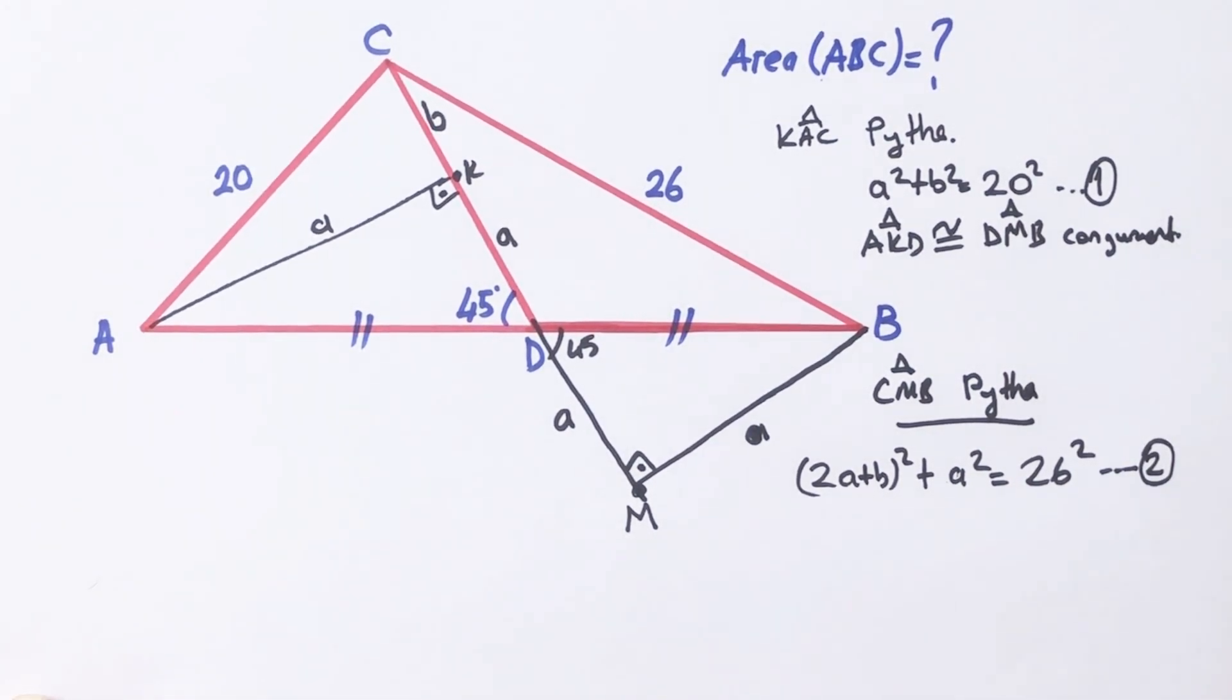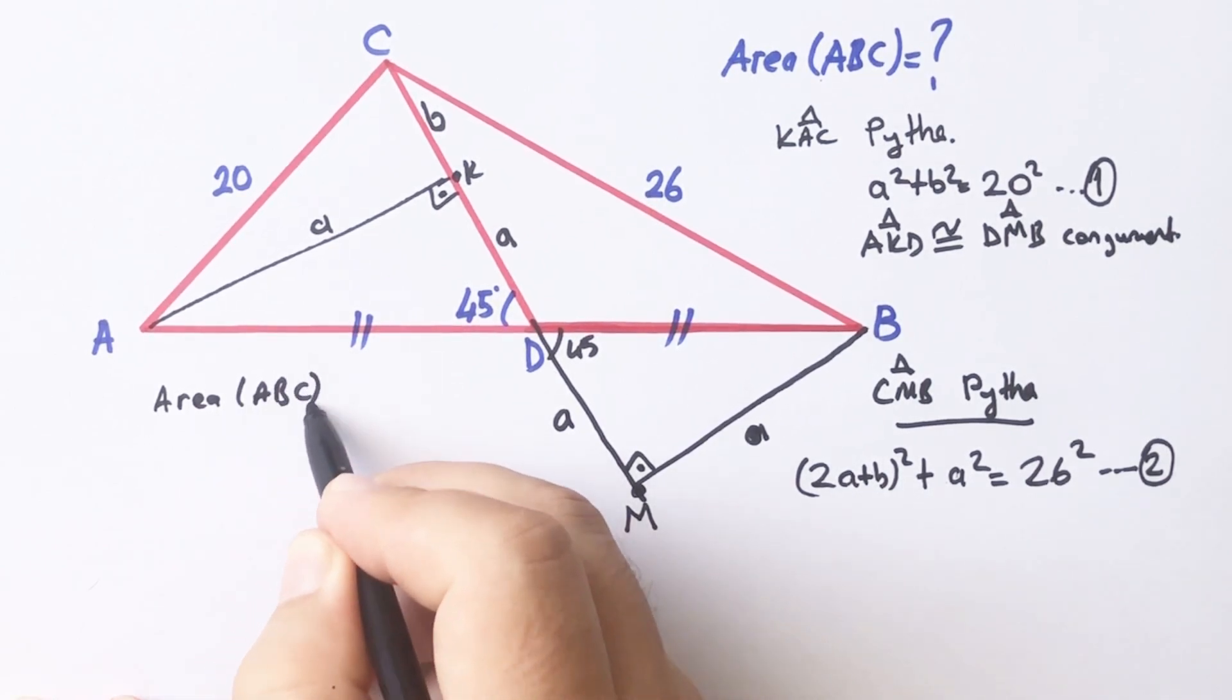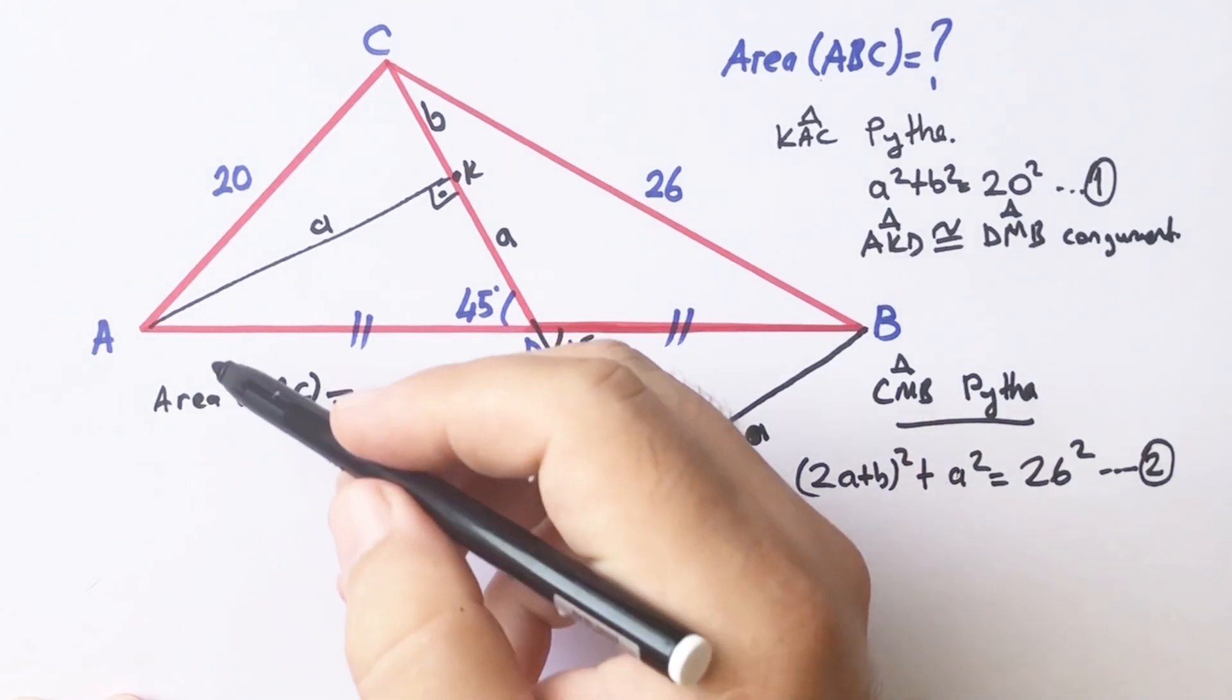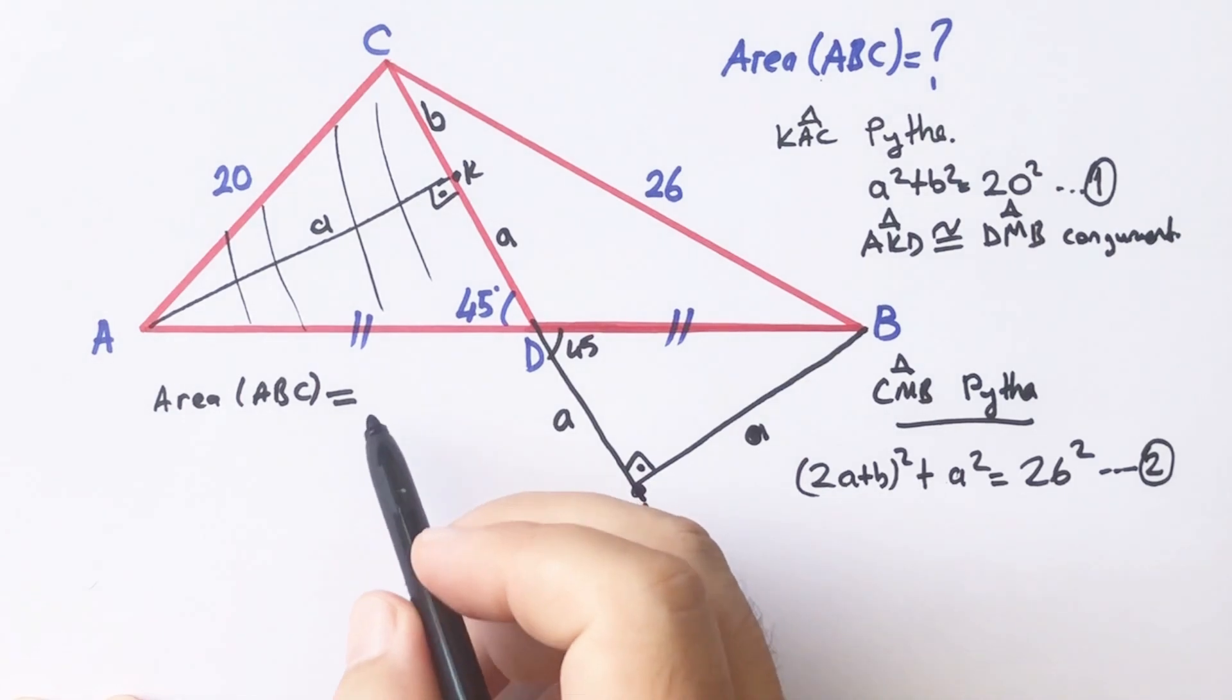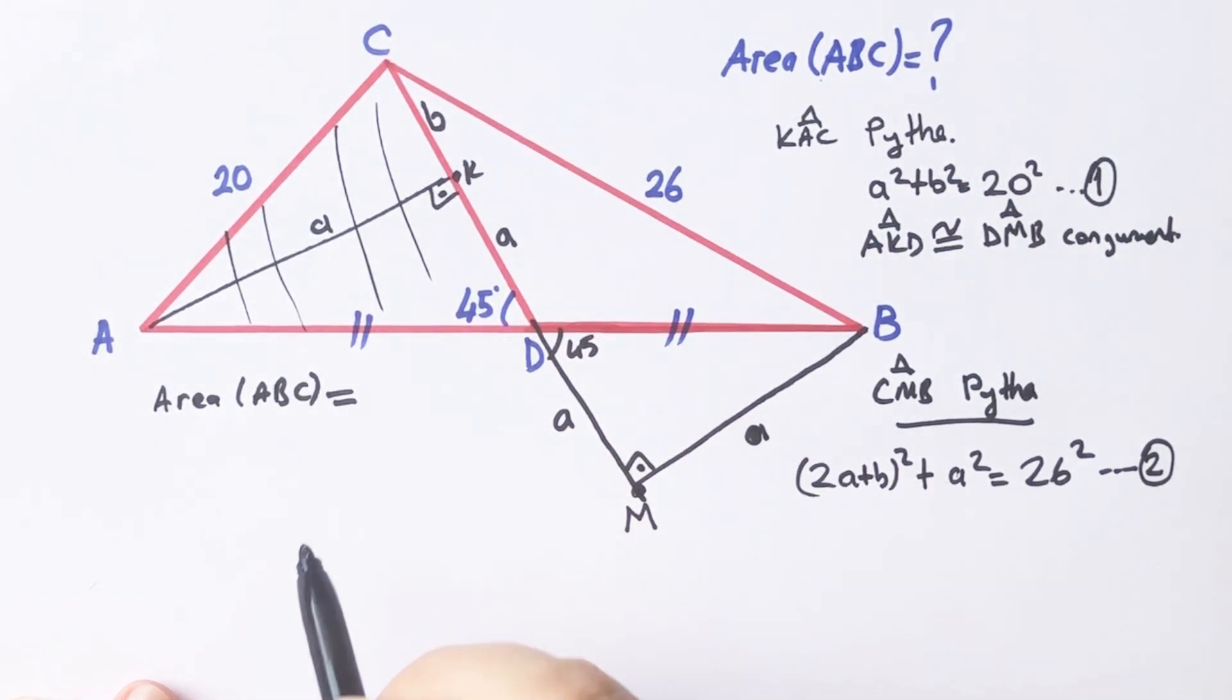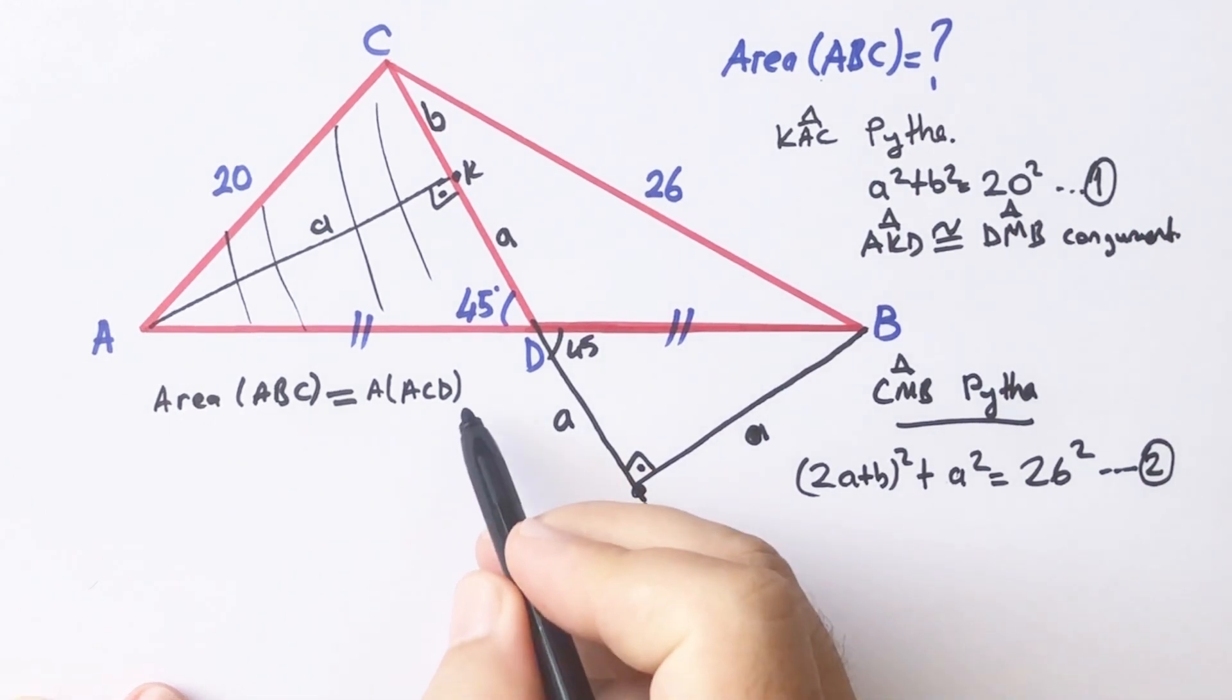And then, if we calculate the area of ABC triangle, ABC triangle area equals 2 times this triangle area, ACD times 2.